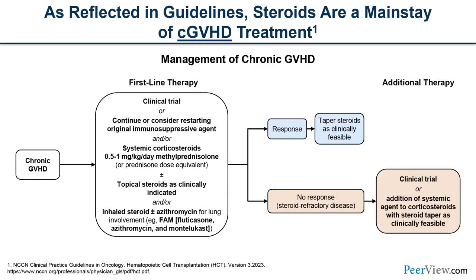Similarly for chronic graft-versus-host disease, for patients with multi-organ disease or more severe symptoms, corticosteroids remain the standard of care. Depending on patient factors like age, comorbidities, and frailty, we may not always be able to start at the highest dose. If patients are responding, that's great — but especially in chronic graft-versus-host disease, most patients will ultimately need multiple lines of therapy and multiple agents available to them over the long term.